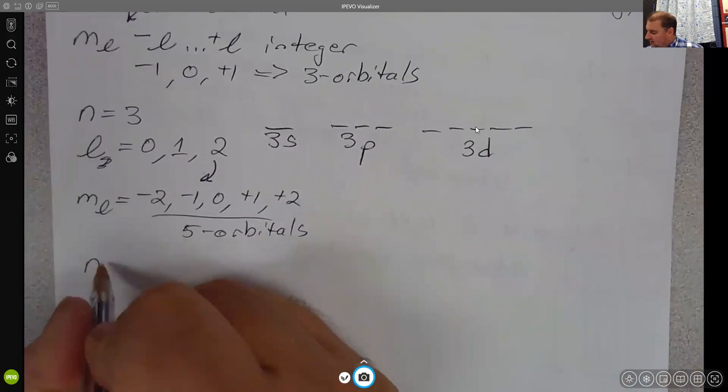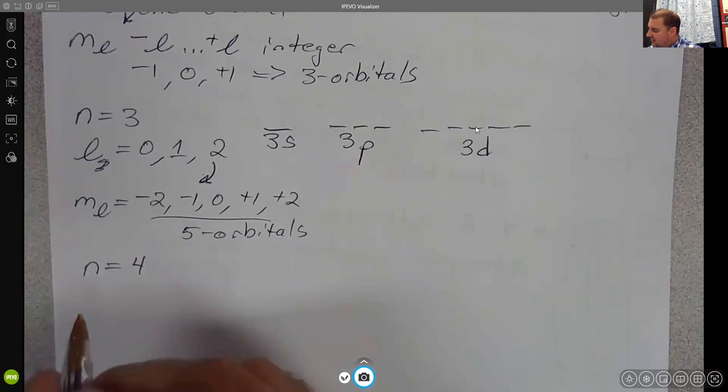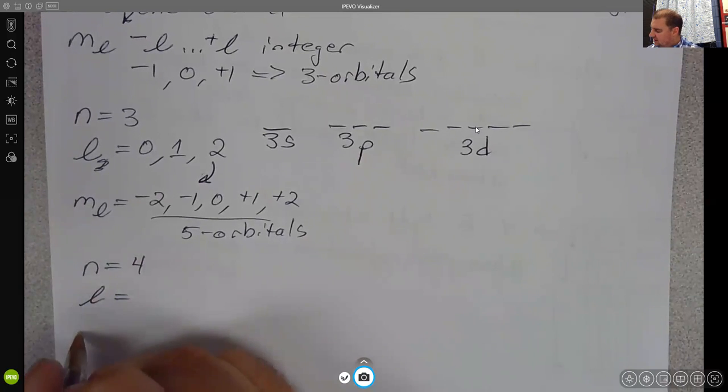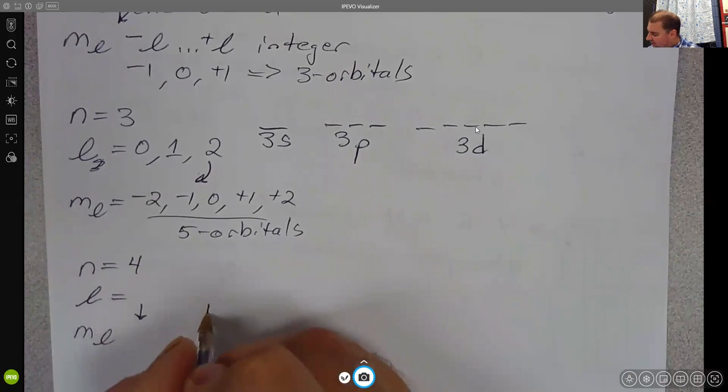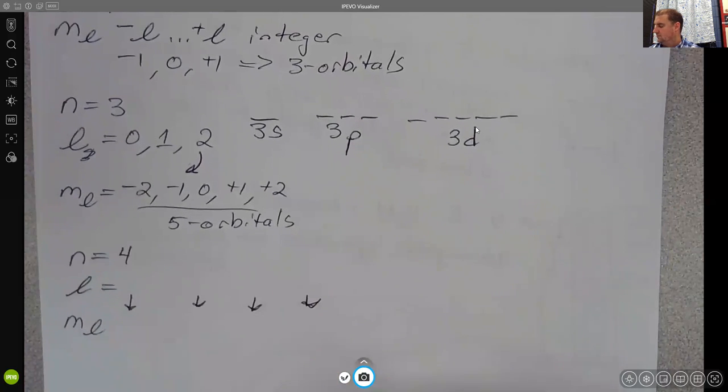Finally, N equals 4. You should go ahead and attempt on your own. And we will check over N equals 4 in class. I would like to know what are the allowed values for L. I would like to know what are the allowed values for M sub L for each value of L. And we'll come back and we'll check over those in class.